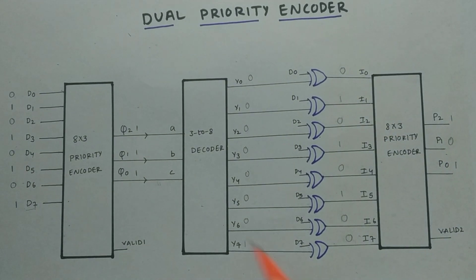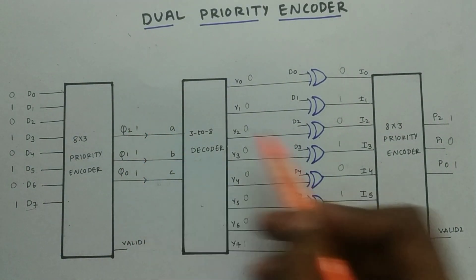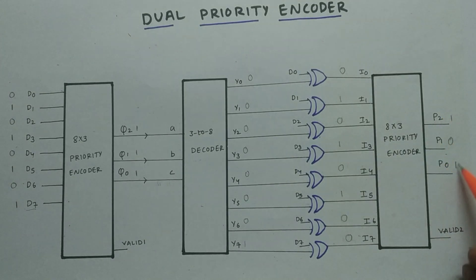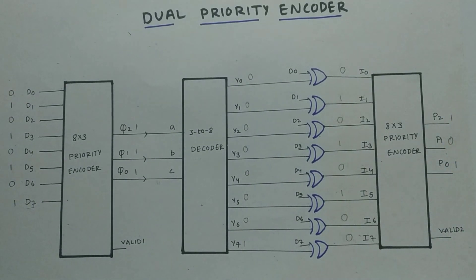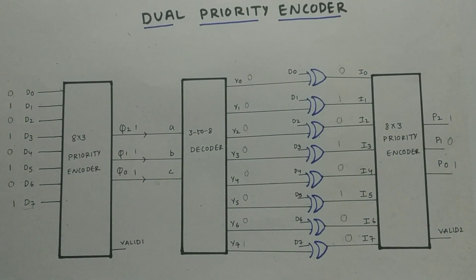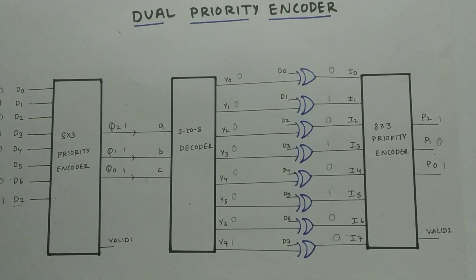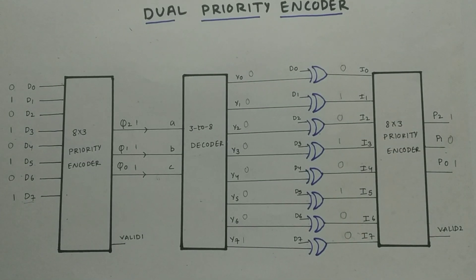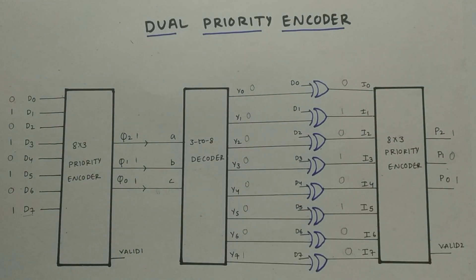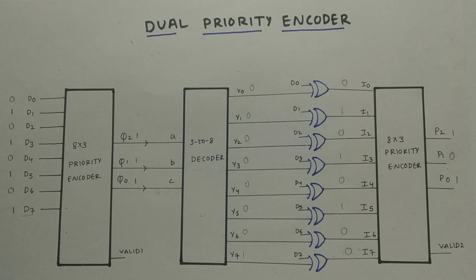There you go — we got the highest priority value from the first encoder and the second highest priority from this priority encoder. If you want to find the third highest priority, use the same decoder again here and you can continue — you can find n number of priorities. The main purpose of this video was to make you a good designer so that you can solve any designs and create your own circuits. This is one part of it: the dual priority encoder.